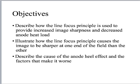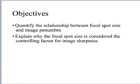It does have some drawbacks — it's not perfect. There are ways it can sharpen things on one side, and it can make an anode heel effect where there are more x-rays produced in one direction than another. So we need to be aware of the limitations. It's a technological improvement, but it didn't fix everything. We'll also quantify how focal spot size relates to penumbra — that shadow or blurriness that exists on the image — and talk about why focal spot size is considered the controlling factor for image sharpness.